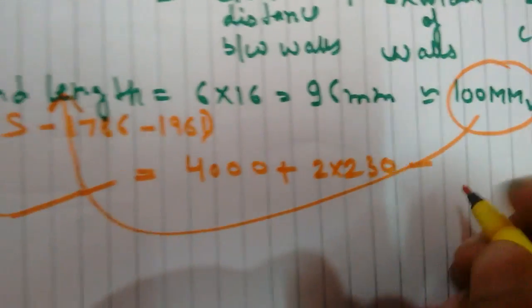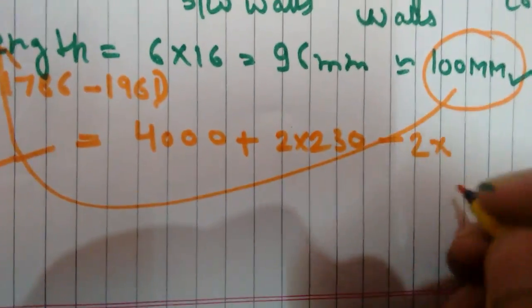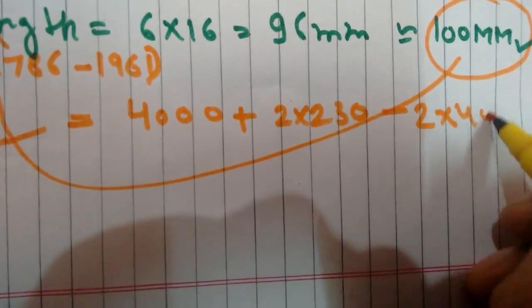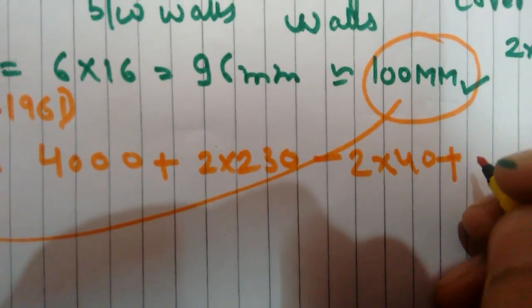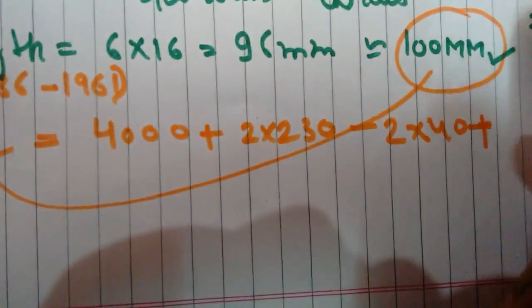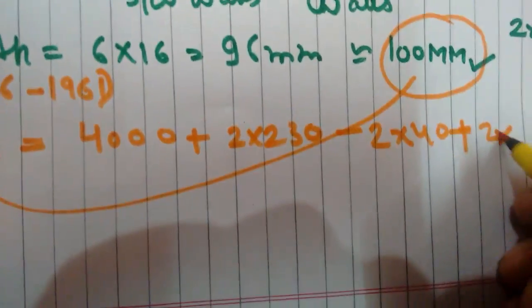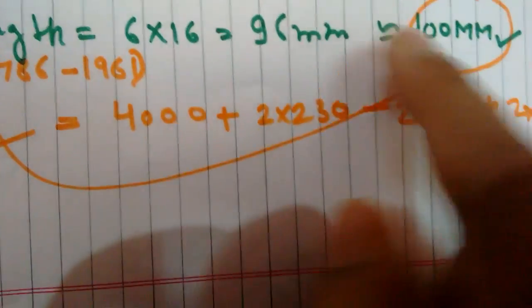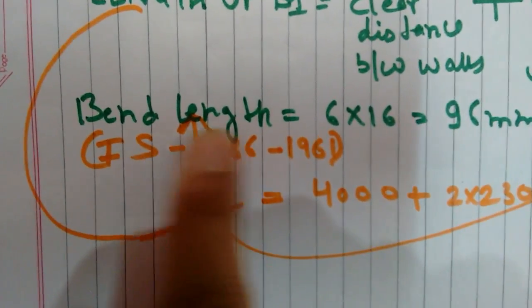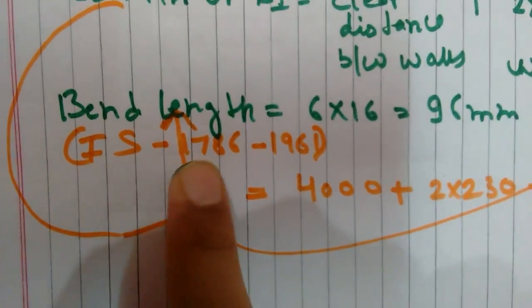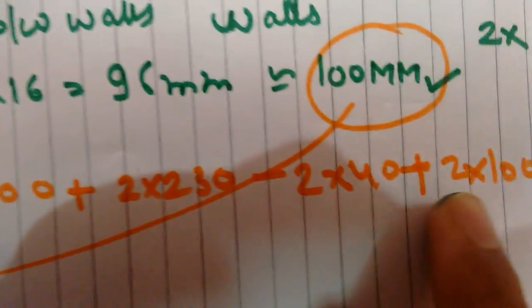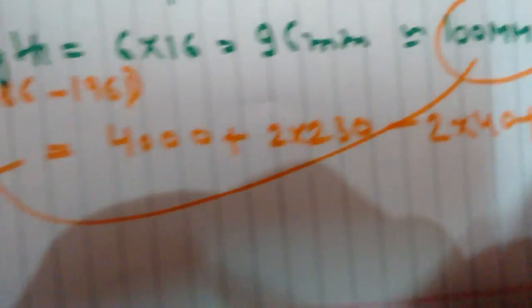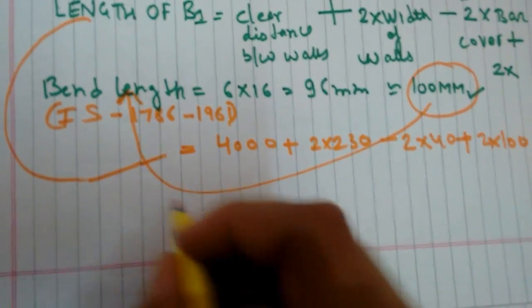Bar cover 2 times 40, plus 2 times X, that is 2 times 100. That is the bend length we have calculated here according to IS 1786-1961. This is 100 value, so total value will come out to be 4580mm.